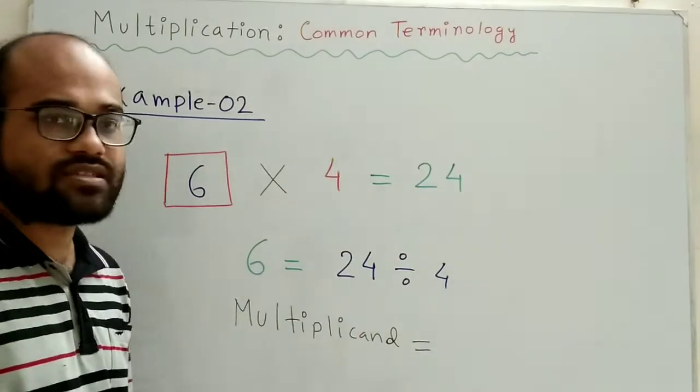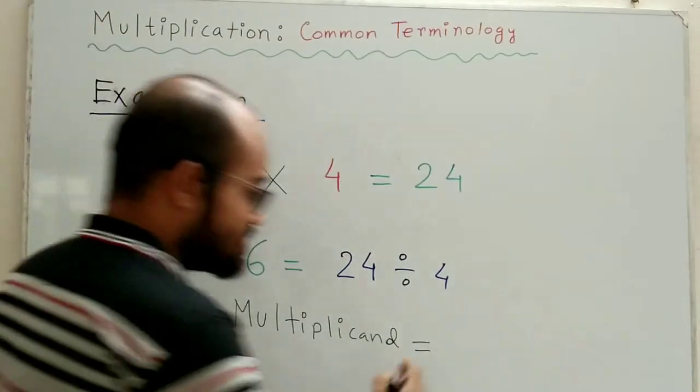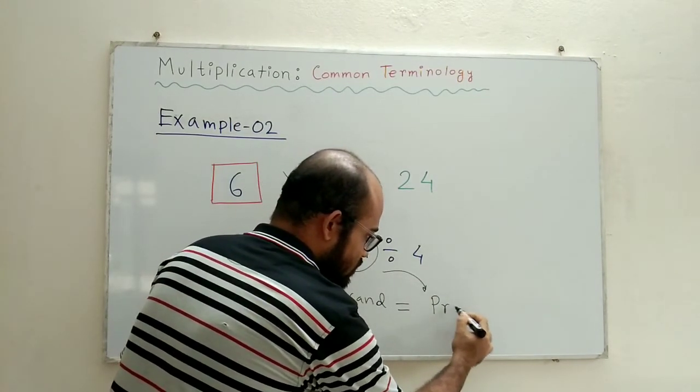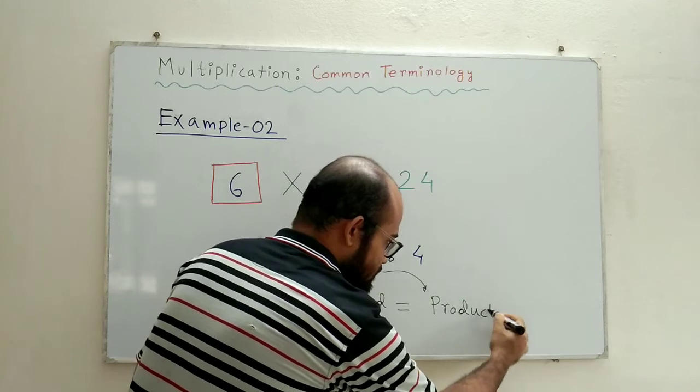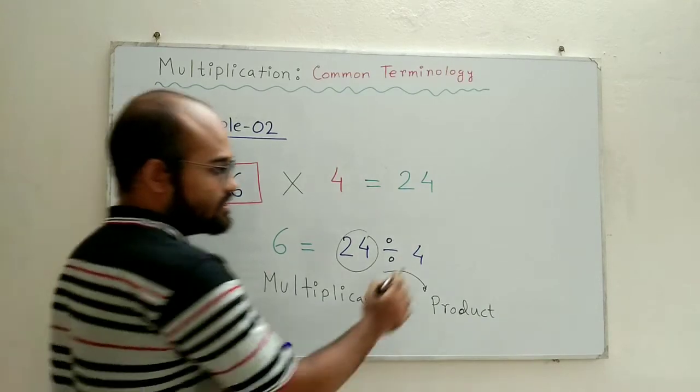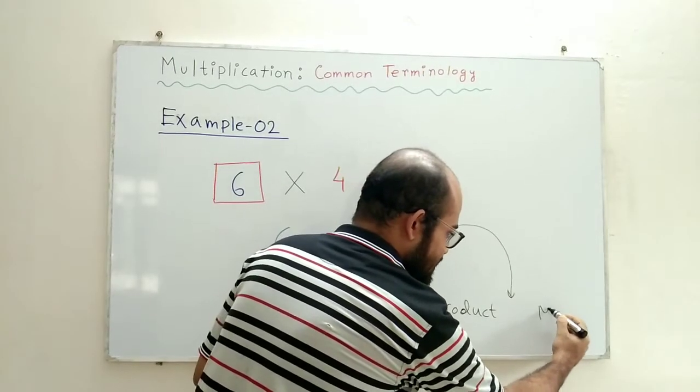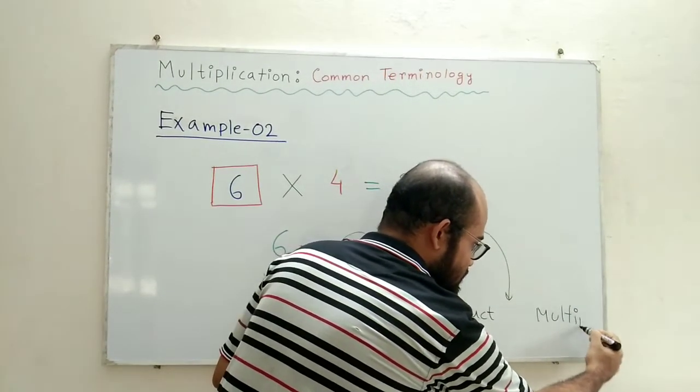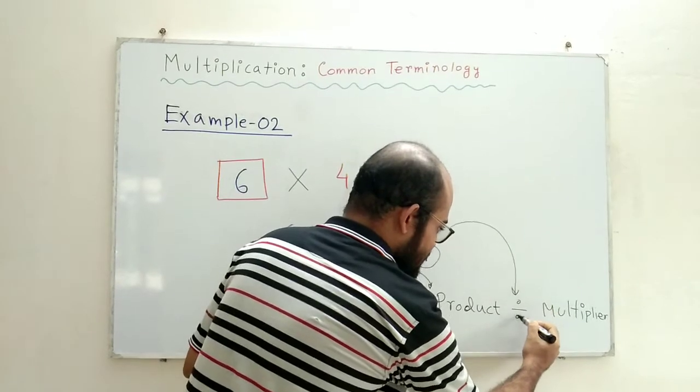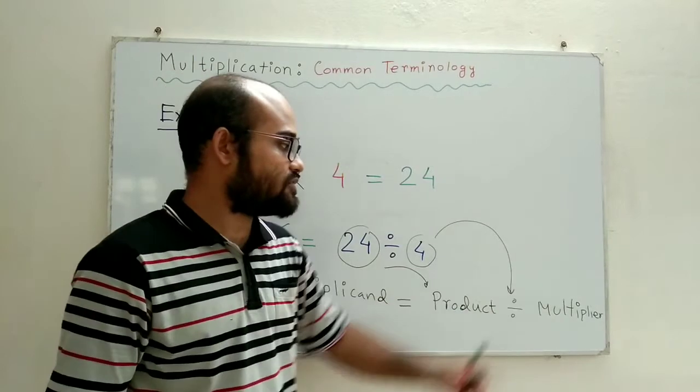Now, what is 24? In our case, 24 is the outcome of multiplying 6 with 4. So, it is product. So, this 24, I can write as product. Now, what is 4? 4 comes immediately after the multiplication sign. So, we can say that 4 is the multiplier. And in between there will be a division sign. So, we can say that multiplicand equals product divided by multiplier.